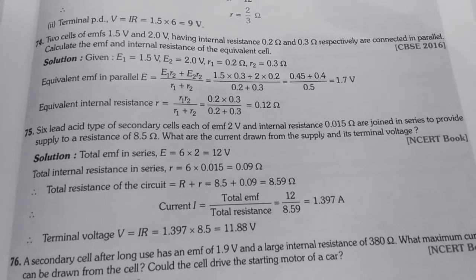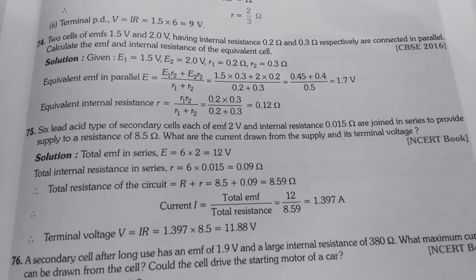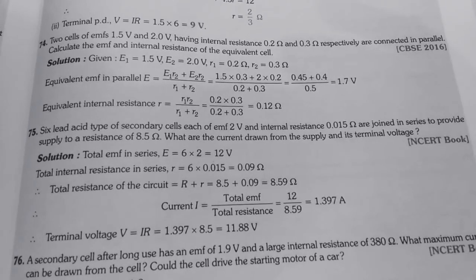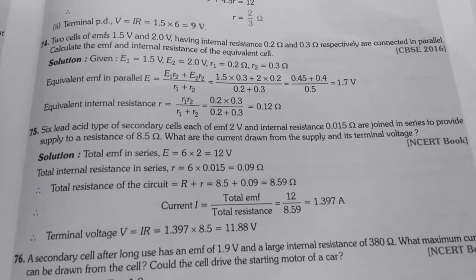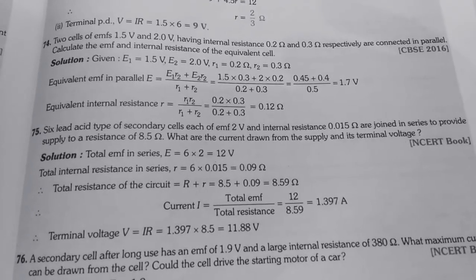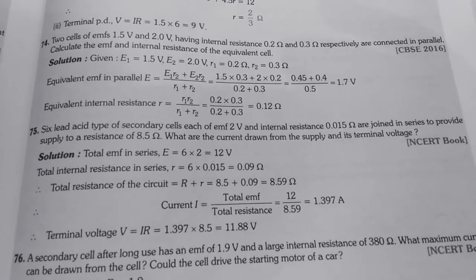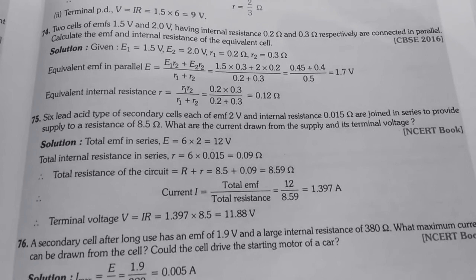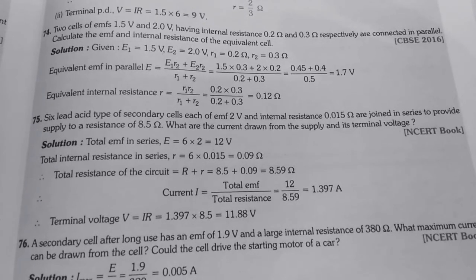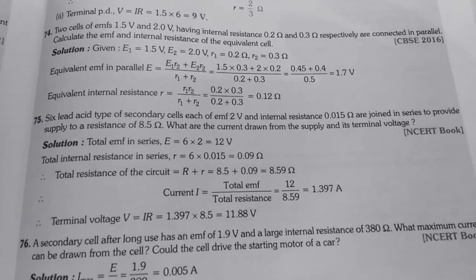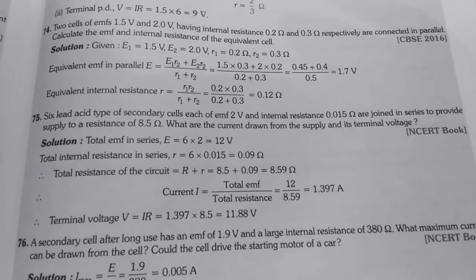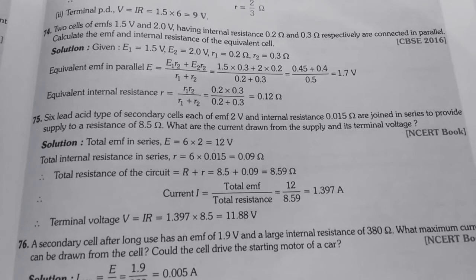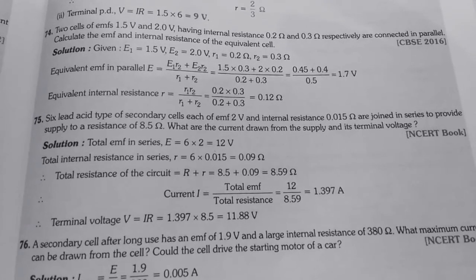Total resistance of the circuit is capital R plus small r. Small r here is total internal resistance. And when we have to find out total resistance, we will simply add capital R plus small r. By putting the value and adding that we will get 8.59 ohm. And from Ohm's law current I equals to total EMF upon total resistance. 12 upon 8.59 equals to 1.397 ampere. And terminal voltage V equals to IR. By putting the value of I and R and multiplying them we get 11.88 volt.